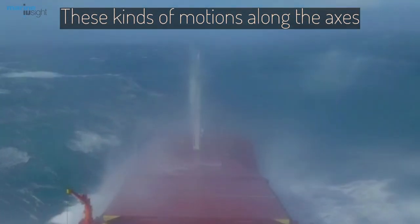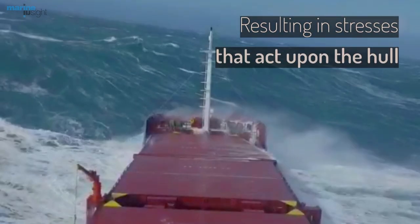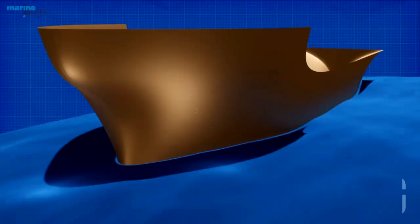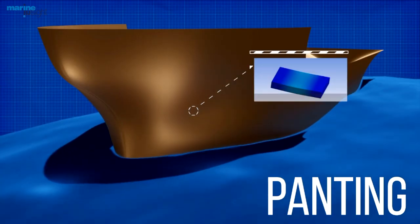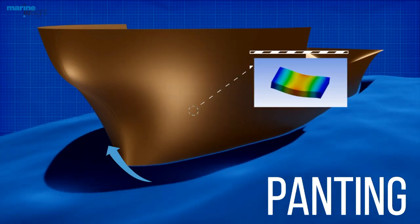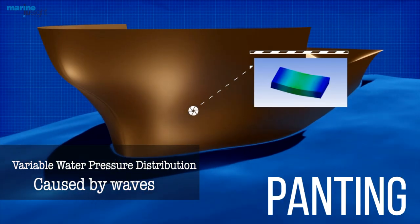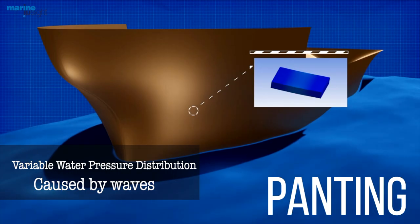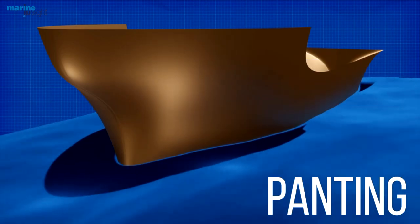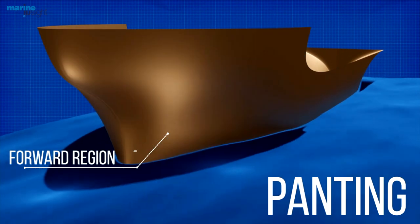These kinds of motions along the axis can sometimes be harmful to the ship and can result in stresses that act upon the hull. Panting refers to the continuous bellowing in and bellowing out of the ship's hull plating due to variable water pressure of waves. This effect is accentuated in the forward region when the ship surges headway through.